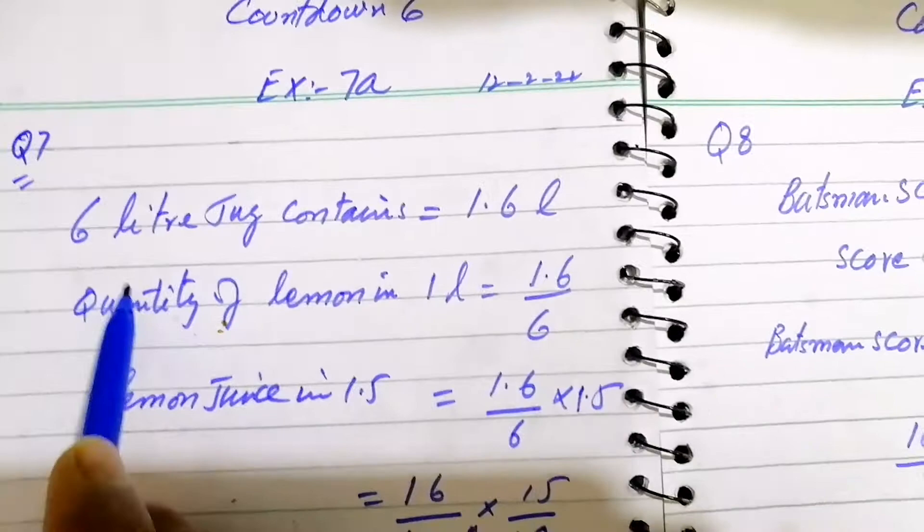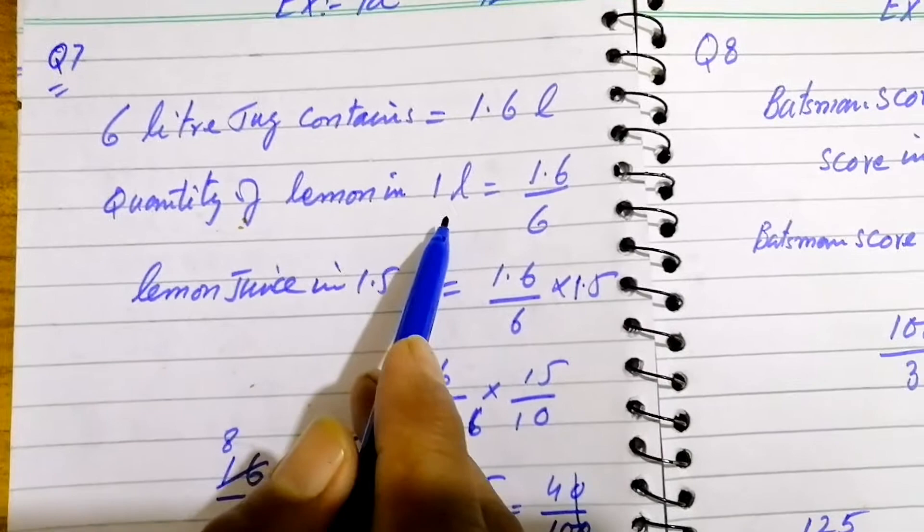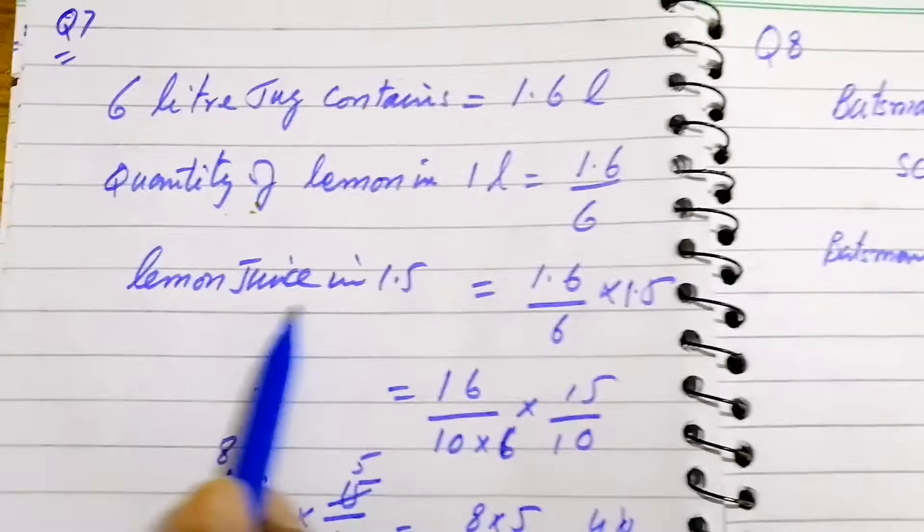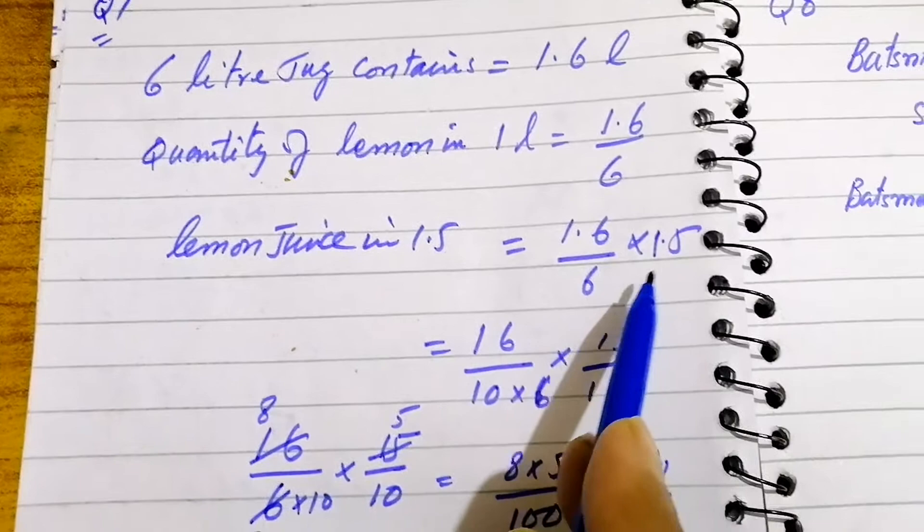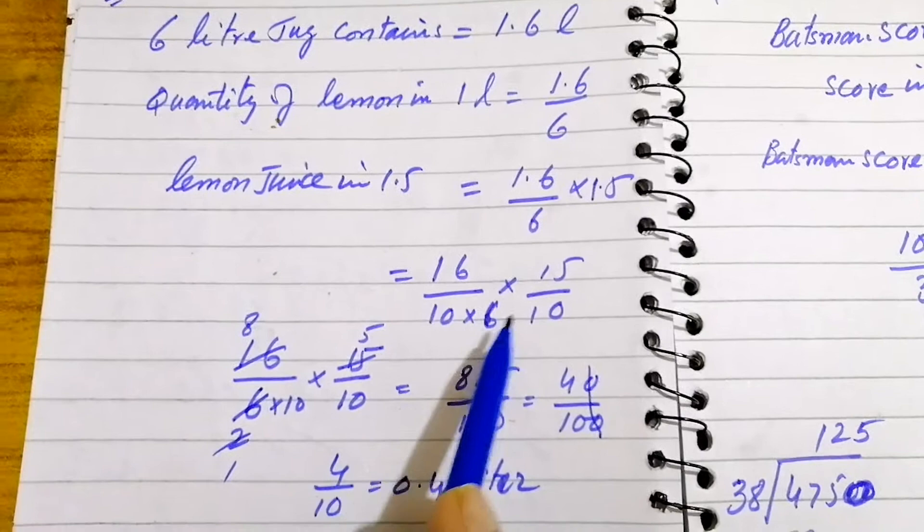Question number 7: 6 liter jug contains 1.6 liters, and quantity of lemon in 1 liter will be 1.6 over 6. Lemon juice in 1.5 liters will be 1.6 over 6 multiplied by 1.5. Removing the decimal, we get 16 over 10 over 6 multiplied by 15 over 10. Then, further canceling the numbers, we get 4 over 10, and this is equal to 0.4 liters.